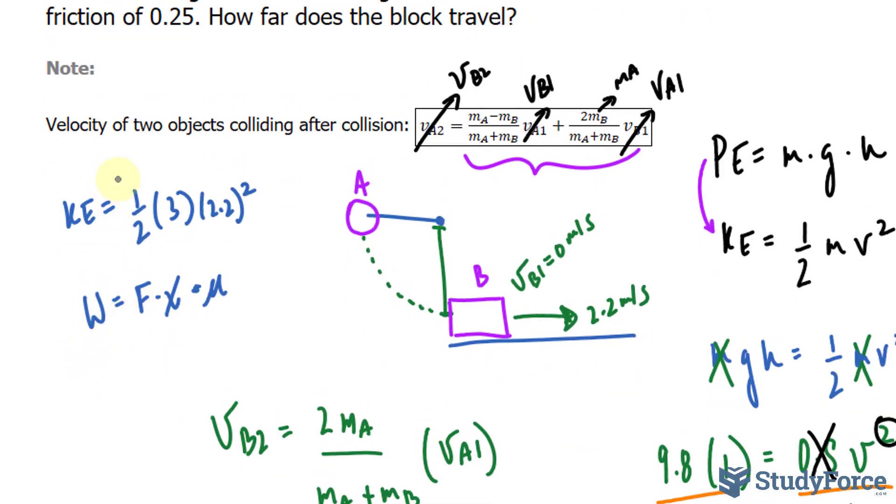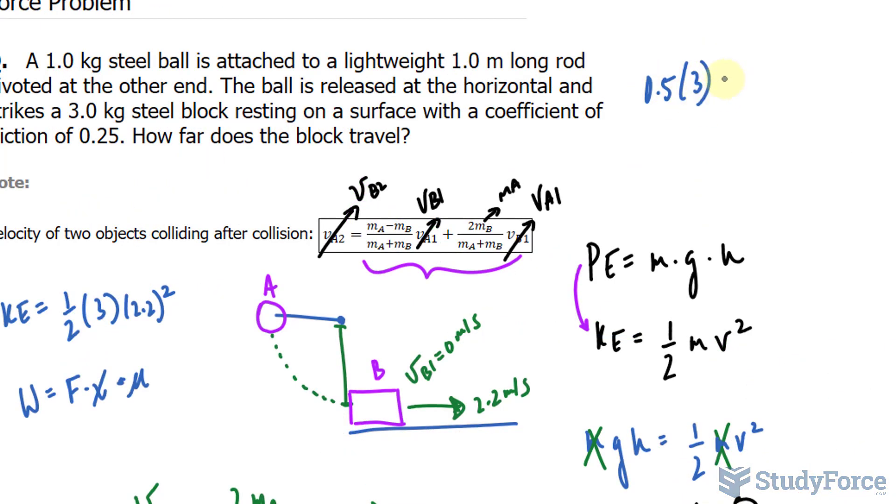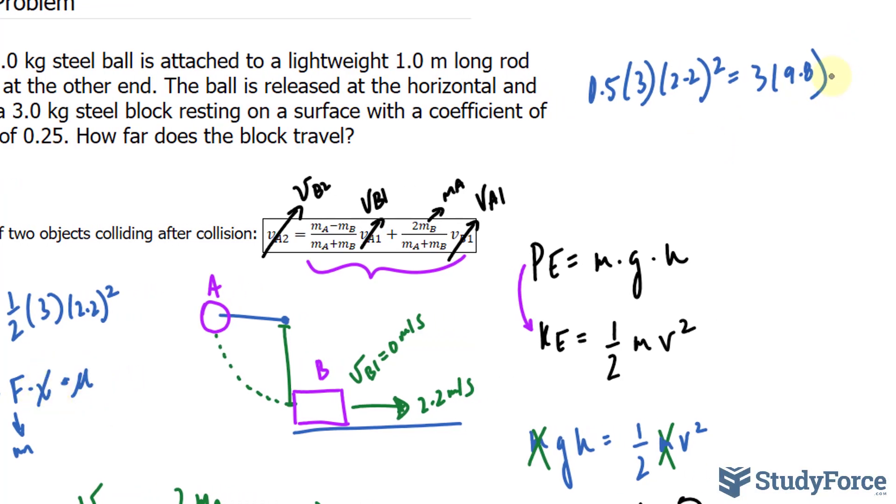Okay, so I have all of this kinetic energy, 0.5 times 3 times 2.2 raised to the power of 2, going into the work required to overcome the friction. Force is mass times acceleration, but in this case, it will be mass times the acceleration due to gravity. So the mass was 3 times 9.8 times the distance which we're looking for times 0.25.